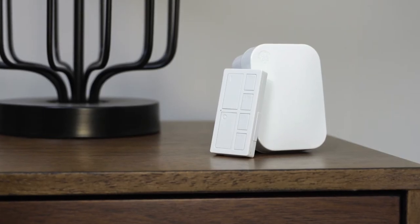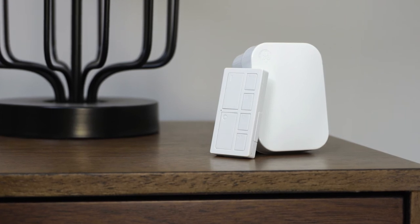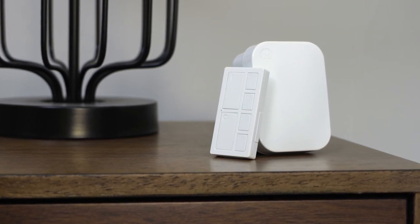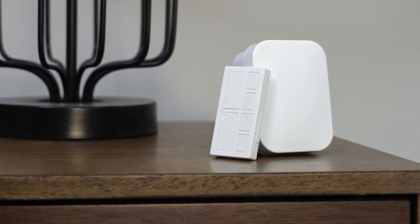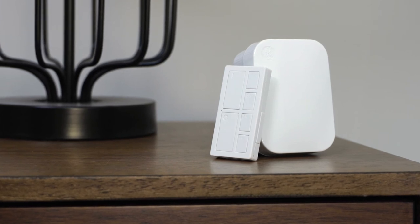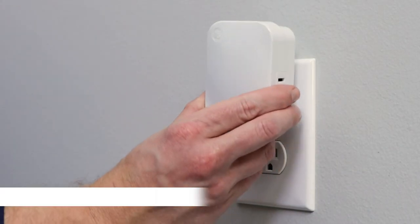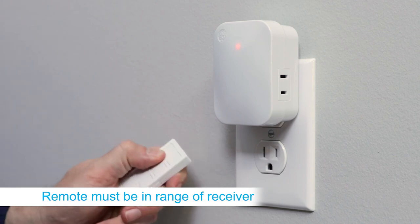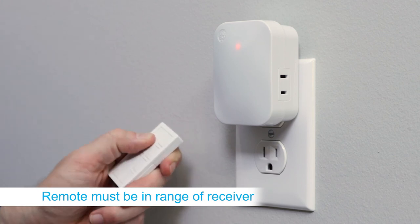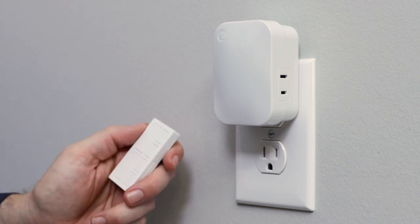The remote and receiver are paired in the package for immediate use. However, you can add or remove any MySelectSmart receivers and remotes to create a custom lighting control network. Within 5 seconds of plugging in the receiver, press any button on the remote for 2 seconds. After 2 seconds, the remote and receiver are paired.